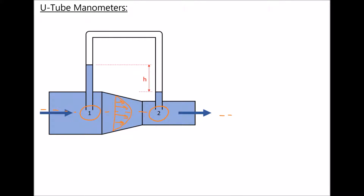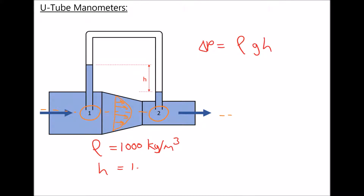The calculation for this is very straightforward. The change in pressure equals density times gravity times height. We have water with a density of 1000 kilograms per metre cubed, and the height difference is 1.8 metres. Therefore the change in pressure is 1000 times 9.81 times 1.8, which equals 17,658 pascals.